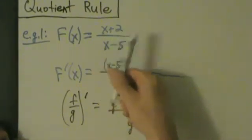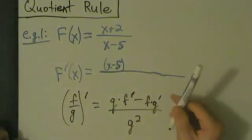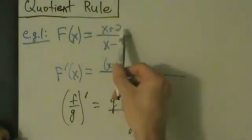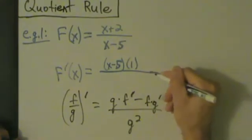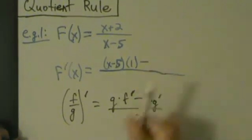The top is x plus 2. What's the derivative of x plus 2? It's going to be 1 plus 0, in other words, just 1. So that's the first term.